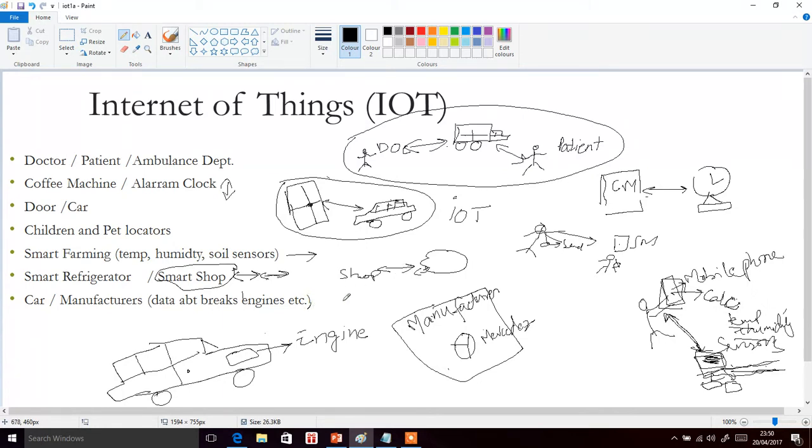There is another example of a car and the communication between car and its manufacturer. We can have different IoT devices connected to the car engine or to the car brakes to measure different parameters of the engines and brakes.